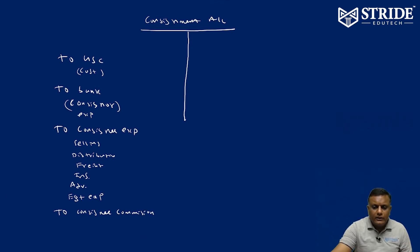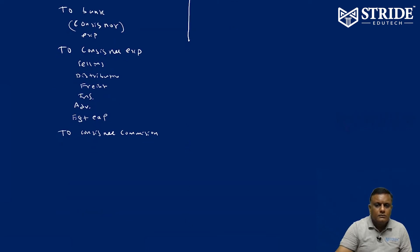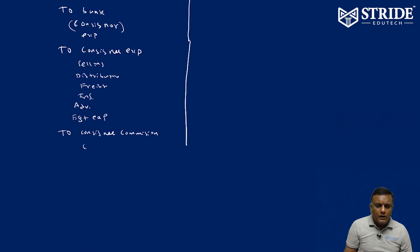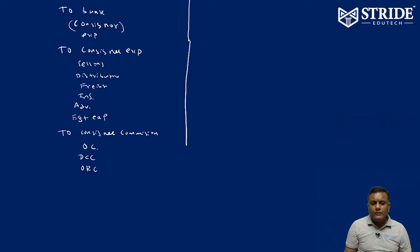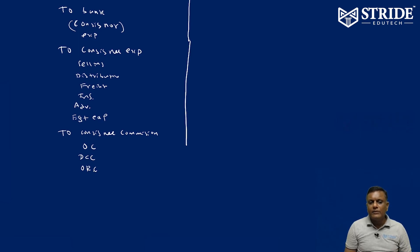Normally the consignee will get three types of commission: number one, ordinary commission; number two, del credere commission; number three, over-riding commission. Ordinary commission is out of sales. Del credere commission is for credit promotions. Over-riding commission is for any price above the endorsed/normal sales price — for surplus, the consignee gets over-riding commission.